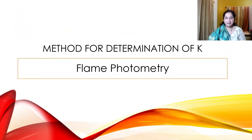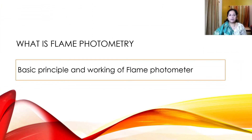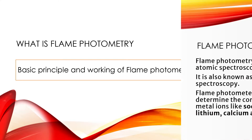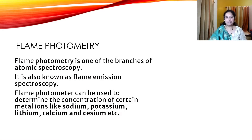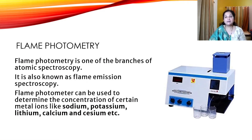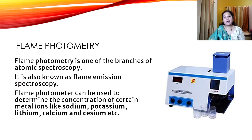For determining potassium, we are going to use the flame photometric method. We need to know what is flame photometry, how it works, and why this technique can be used for determination of potassium. Flame photometry is one of the branches of atomic spectroscopy, also known as flame emission spectroscopy. It has become a necessary tool in analytical chemistry for determining metal ions like sodium, potassium, lithium, calcium, cesium — basically alkali and alkaline earth metals.